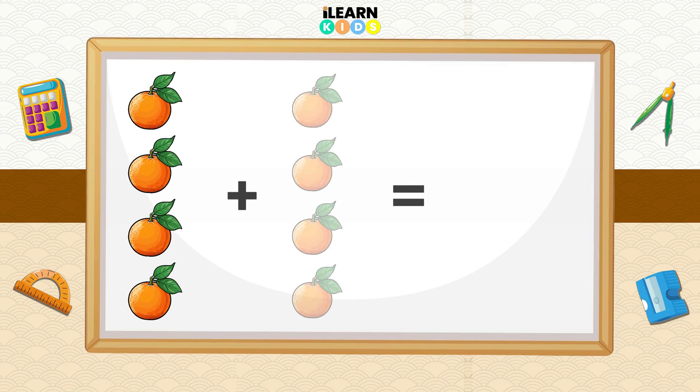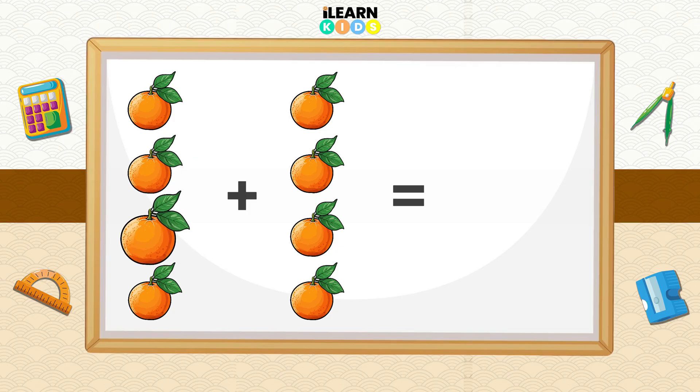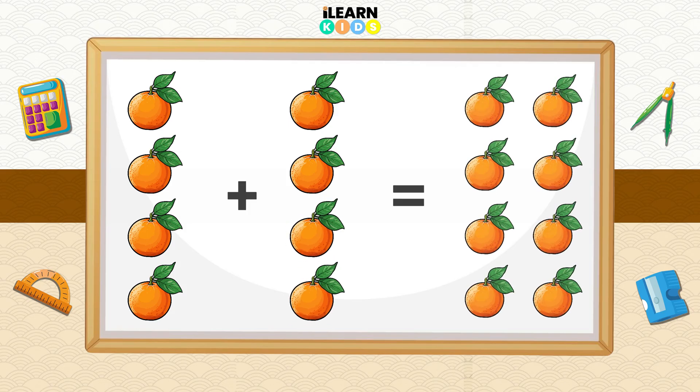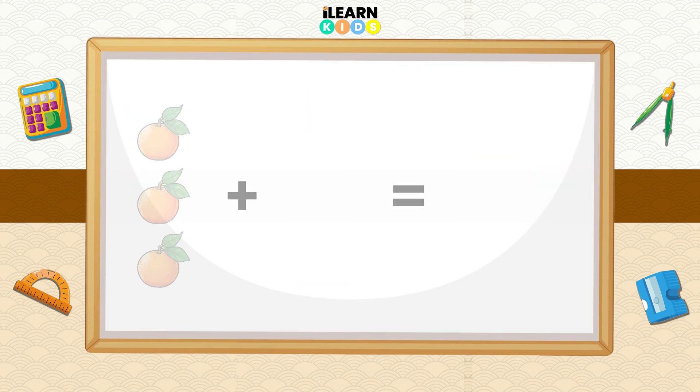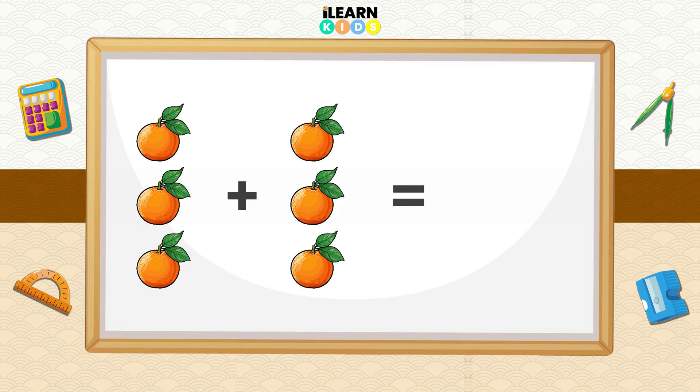Let's try a big one: 4 plus 4. Count with me: 1, 2, 3, 4, 5, 6, 7, 8. Great! 4 plus 4 equals 8. What if I add 3 plus 3? Can you count it out? That's right, it gives us 6.